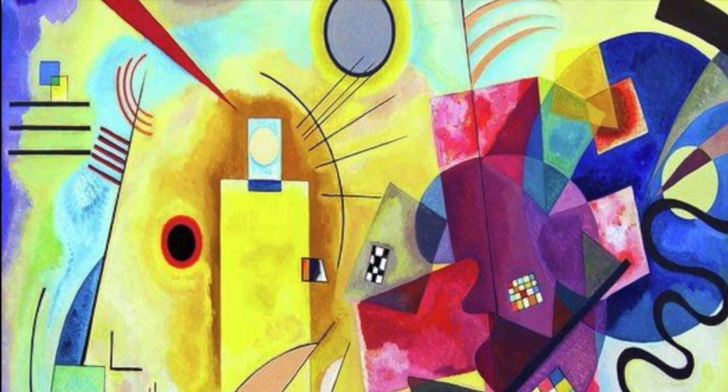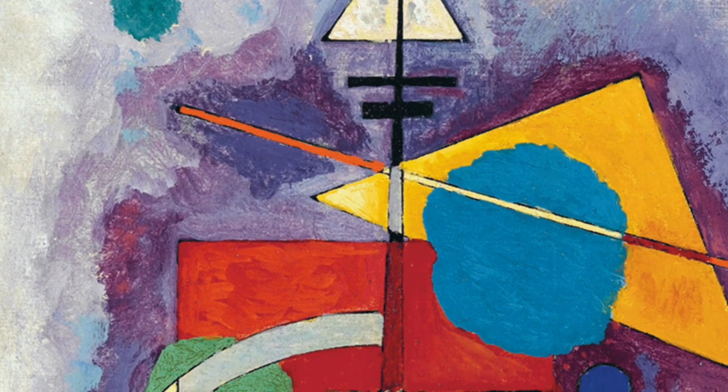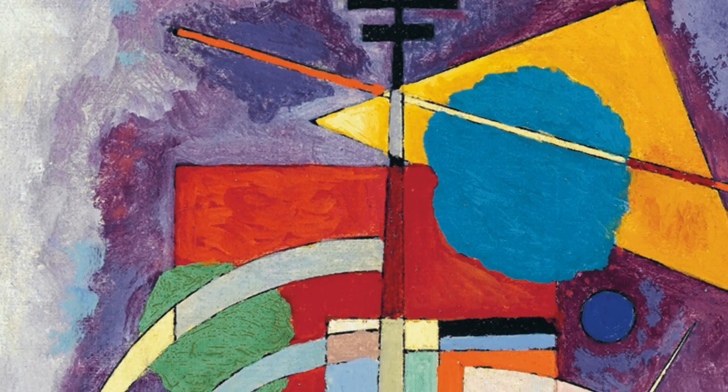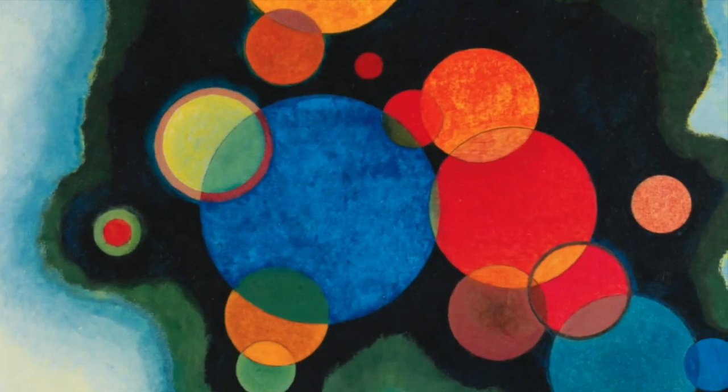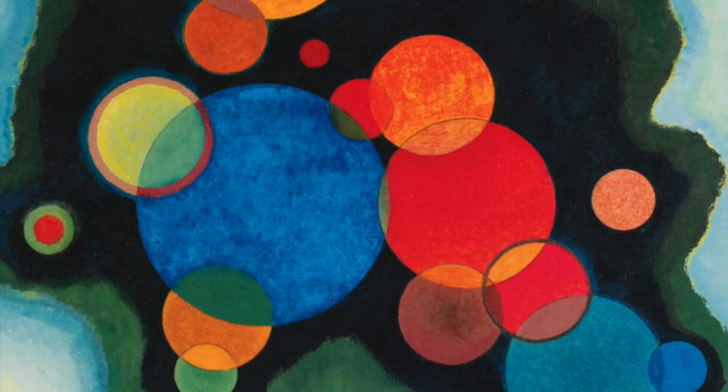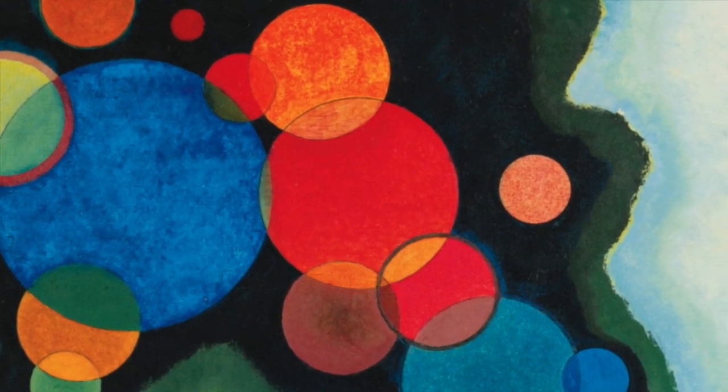Kandinsky went to college and then became a law professor. However, when he was 30, he decided to change careers and become an artist. Over the next several years, Kandinsky would start to paint what would become known as abstract art. He was one of the founding fathers of abstract art.